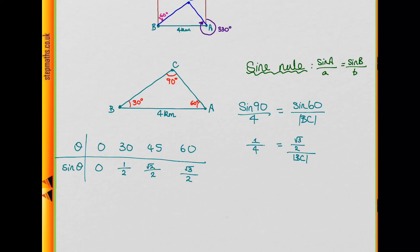So we substitute that in and we get a quarter is equal to root 3 over 2 divided by the length of BC. And so BC is equal to 2 root 3, and our answer is B.